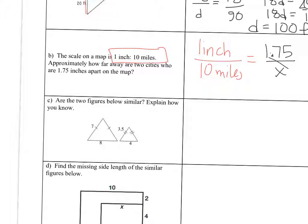Now I'm going to cross multiply. So 1 times x is just x equals 10 times 1.75. So if you multiply something by 10, you just need to move the decimal over. So it's 17.5 miles.